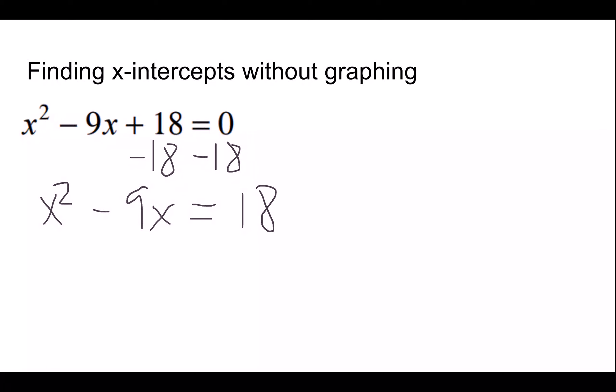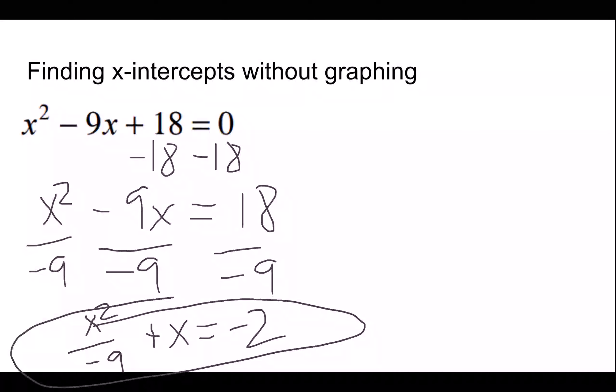And then some of us would go, oh, well, we have a 9 there, so let's divide by negative 9. And then we get x squared over negative 9 plus x equals negative 2. And then you still have two x's, and you don't know how to combine things, and you're just kind of stuck. You've just kind of got a mess.